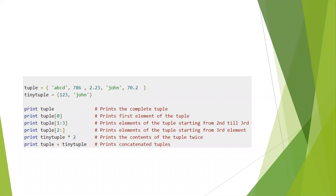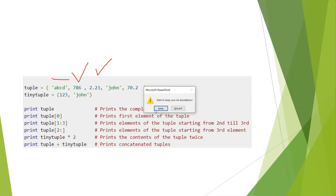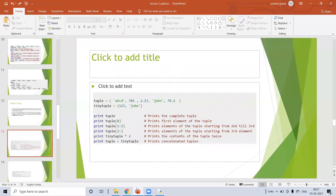The same type of example applies for tuple: print(tuple) prints the whole tuple, print(tuple[0]) prints the first element like ABCD, tuple[1:3] means positions 1 to 2, tuple[2:] prints from position 2 to the end, tuple * 2 prints this tuple two times, and print(tuple + tinny_tuple) means both tuples will be printed. Now demonstrating in Python — I changed the variable name from list to tuple and replaced square brackets with small brackets.